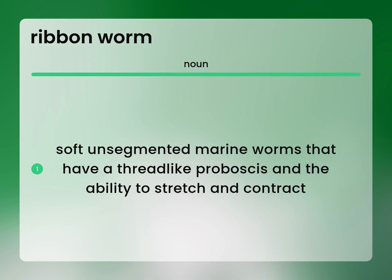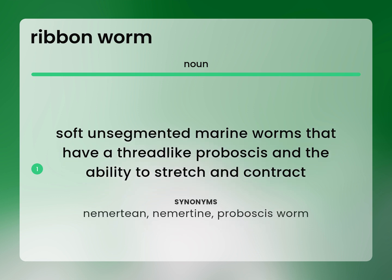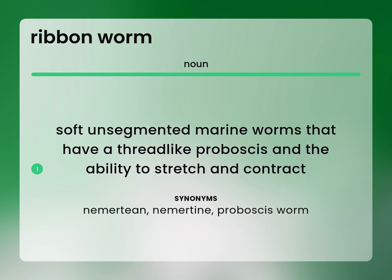Soft, unsegmented marine worms that have a thread-like proboscis and the ability to stretch and contract. Nemertein. Proboscis Worm.